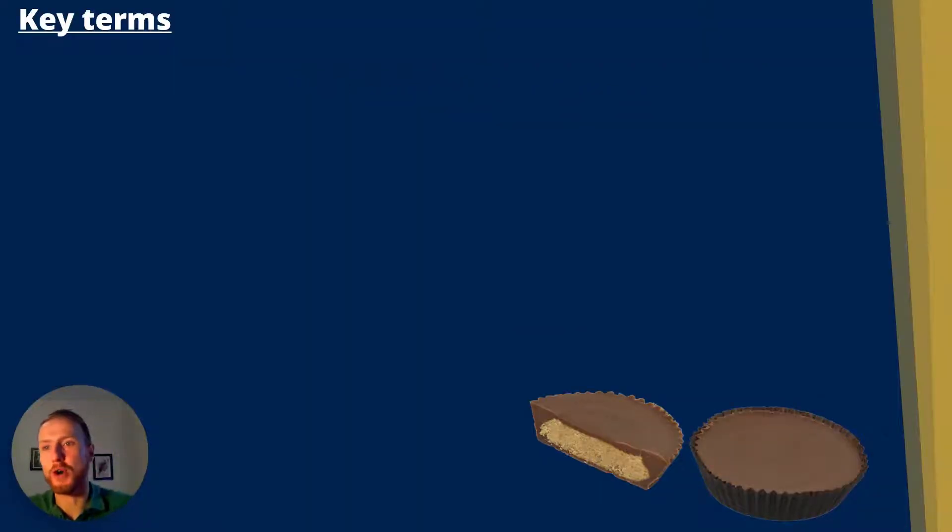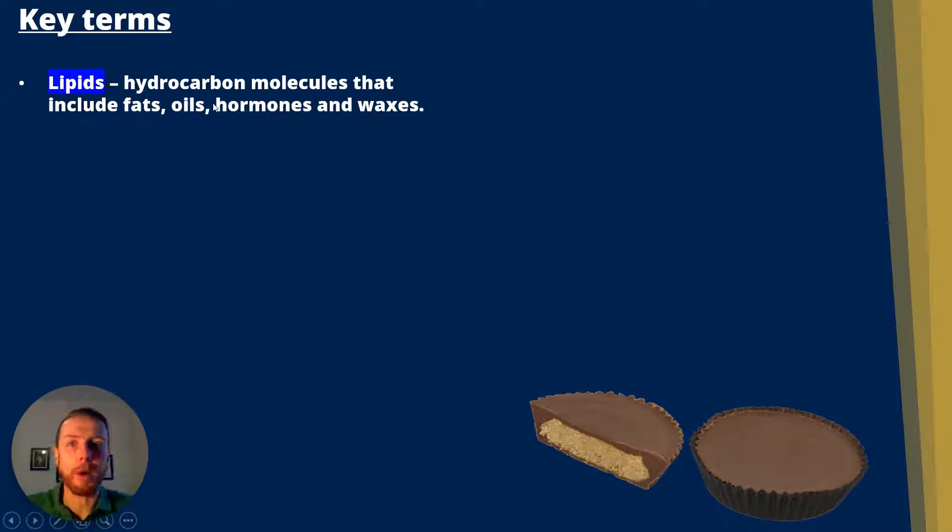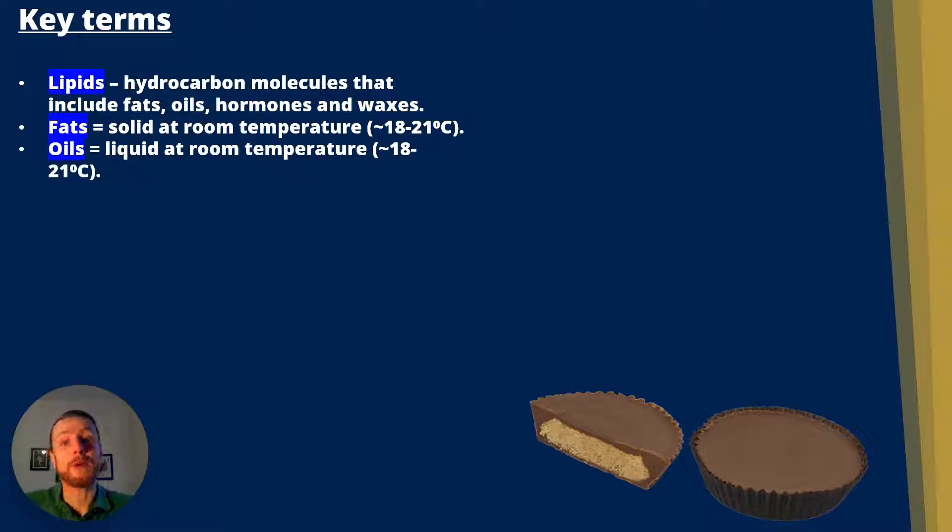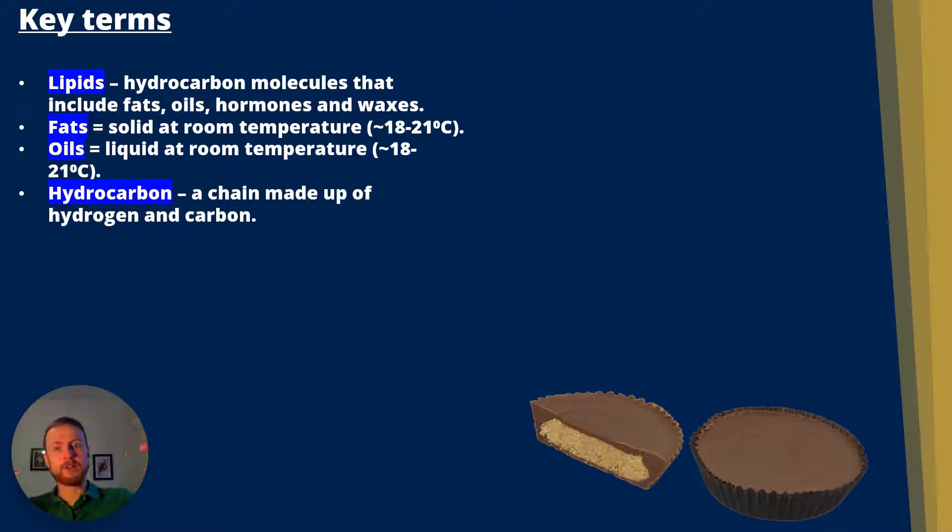So some key terms to get us started. Lipids are hydrocarbon molecules, meaning they're made up of hydrogen and carbon predominantly, and they include things like fats, oils, hormones, and waxes. Fats are solid at room temperature, which is about 18 to 21 degrees. Oils are liquid at room temperature. Hydrocarbons are long chains of hydrogen and carbon. Remember, carbon can form four bonds, hydrogen forms one.